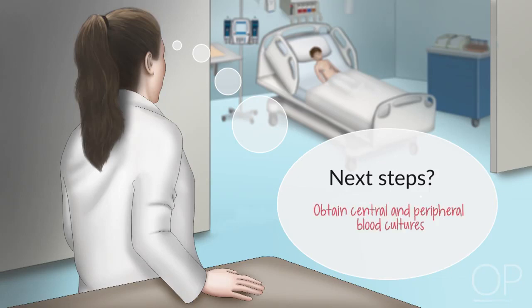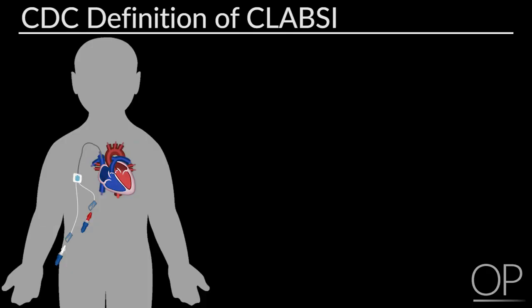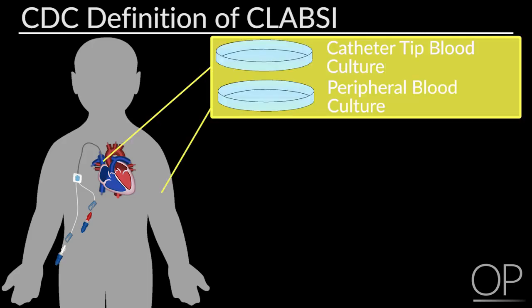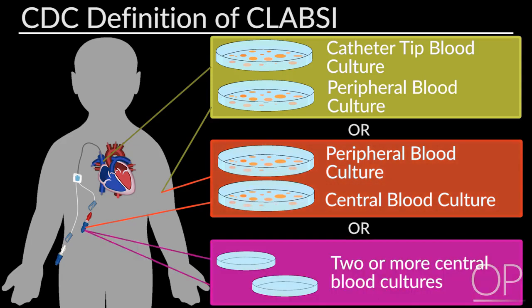You obtain central and peripheral blood cultures. The CDC defines central line associated bloodstream infection as one of the following: cultures from peripheral blood culture and catheter tip grow the same organism; or cultures from peripheral and central blood cultures grow the same organism; or two or more central blood cultures grow the same organism.